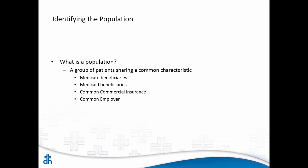In many instances a population shares the characteristic of who's paying for the care. That may not be the most altruistic thing you hear all day, but it's the reality. Maybe it's Medicare beneficiaries, or a common commercial payer — Deaconess has contracts with Anthem, Humana, and United Healthcare that make us accountable for care. We have risk with Medicare; we're one of 21 programs throughout the country in a new program — our Medicare ACO.